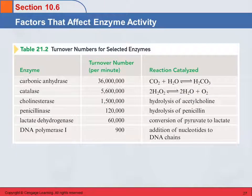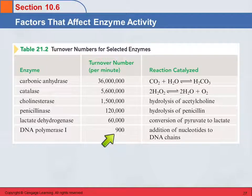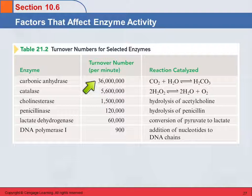Here's an example of the variation in turnover number. DNA polymerase I — one molecule will catalyze the reaction of 900 substrate molecules per minute. At the other extreme, carbonic anhydrase can take care of 36 million molecules in a minute. The turnover numbers for enzymes are much higher than for inorganic catalysts, which are more in the range of 2 to 5 times faster.